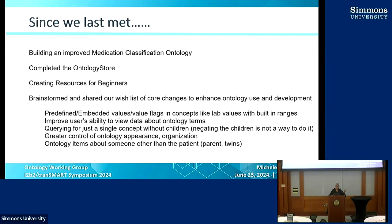We did the same brainstorming exercise that Griffin did in the UI workgroup — brainstorming changes to the core system that we think would benefit ontology development and use. One of the main ones I wanted was being able to pre-define or embed values or value flags into an ontology concept.